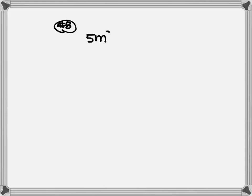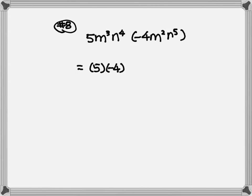Next, let's look at number 8. We have 5n to the third power times n4 times negative 4m squared n to the fifth power. Again, you multiply number times number — 5 times negative 4. Same variable times same variable: write down one m, combine the exponents. Then for n, write down one n, combine the exponents. So the answer will be negative 20m to the 1st, n to the 9th.